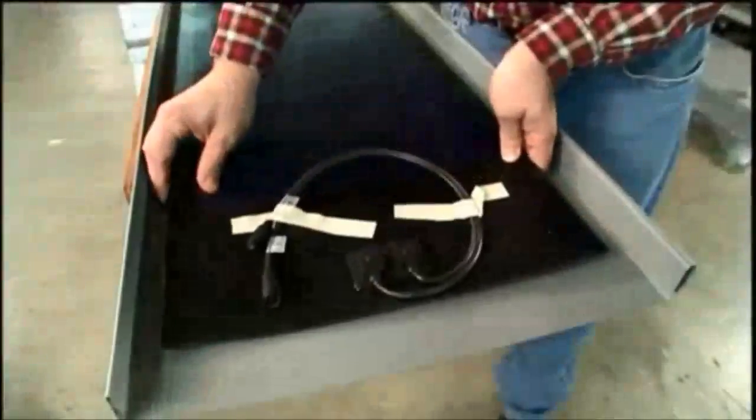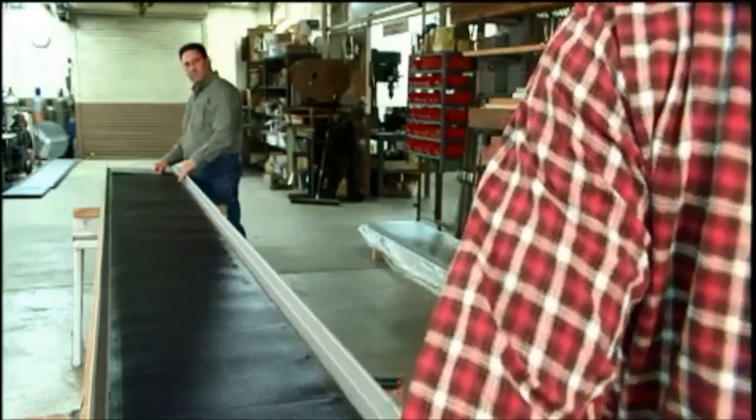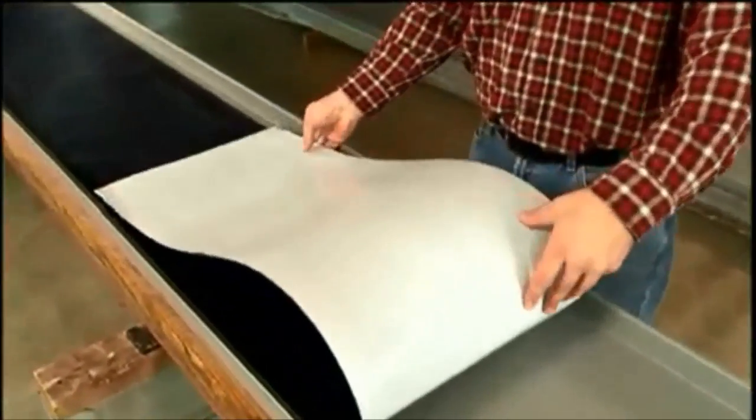Without removing any adhesive release paper, carefully place both ends of the laminate in the proper location using the pencil marks as guides. Once both ends are located properly, pull back 2 or 3 feet at the top end of the laminate.